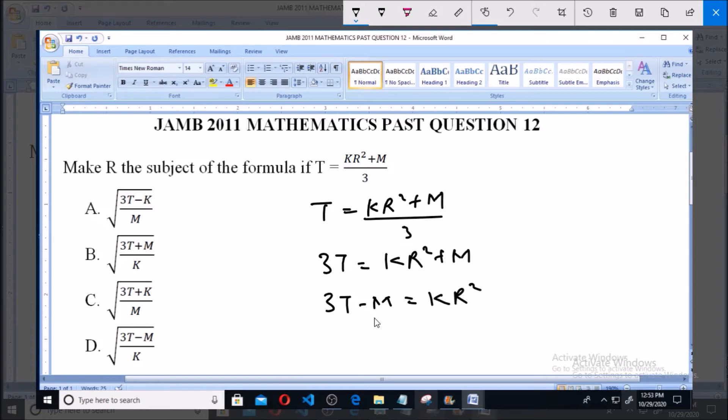Now to eliminate this K, we simply divide both sides by K. So we have R squared equals 3T minus M all over K, because this K cancels with this K here.